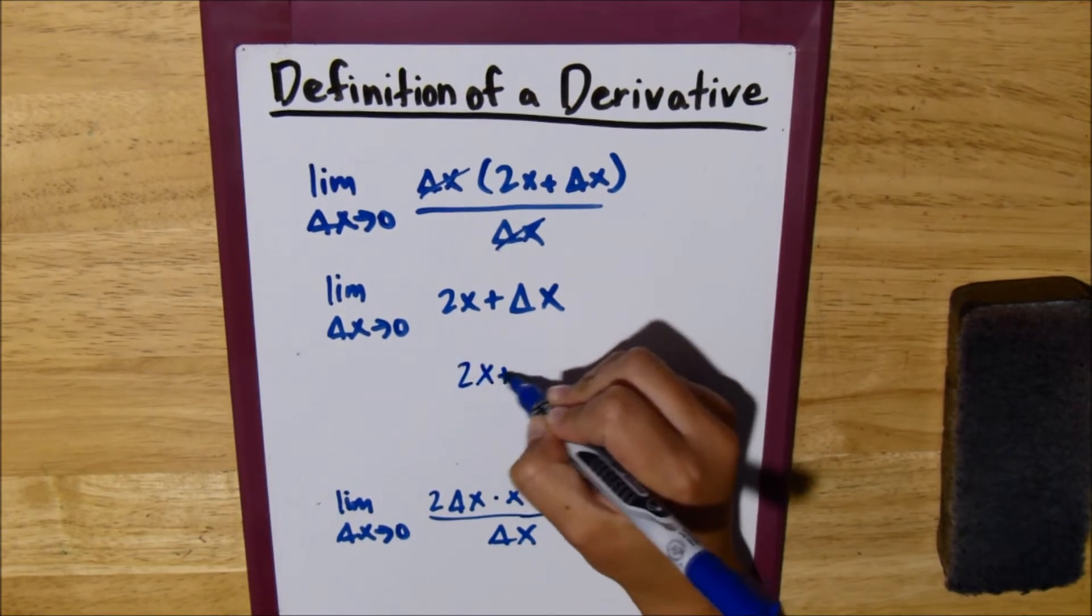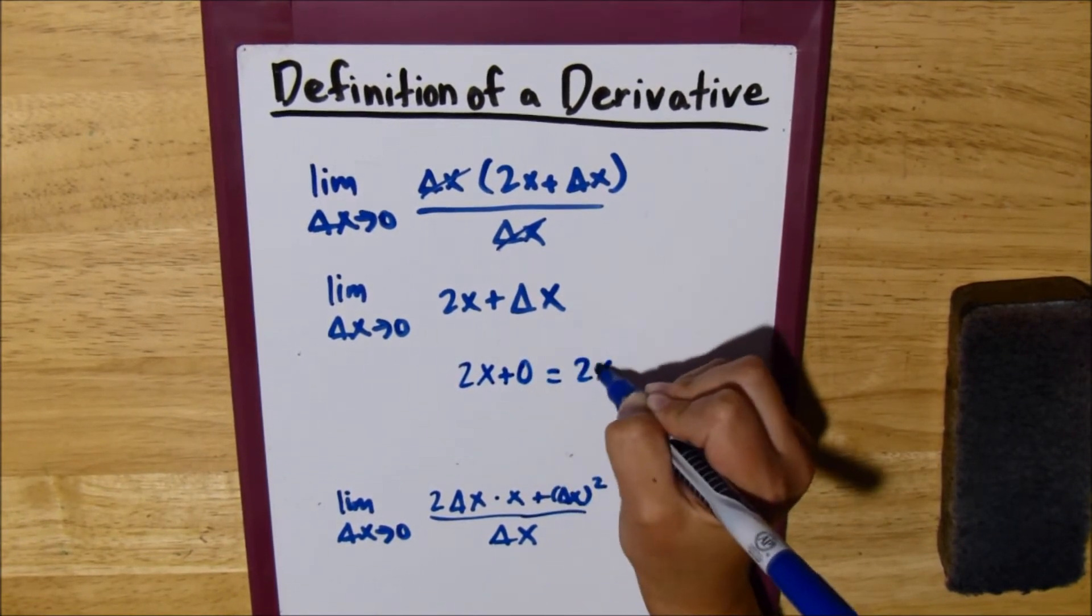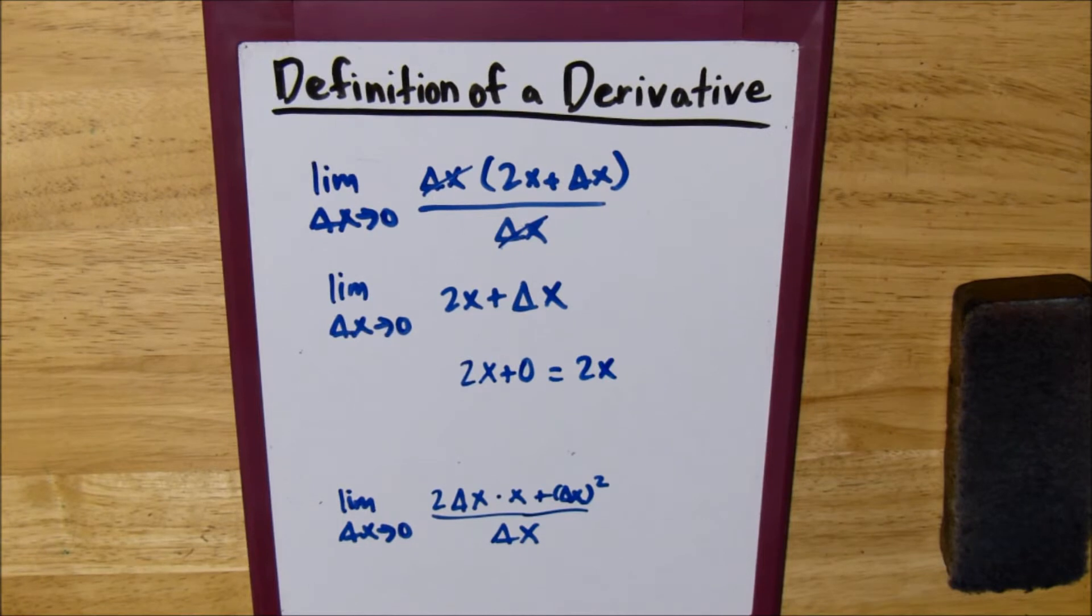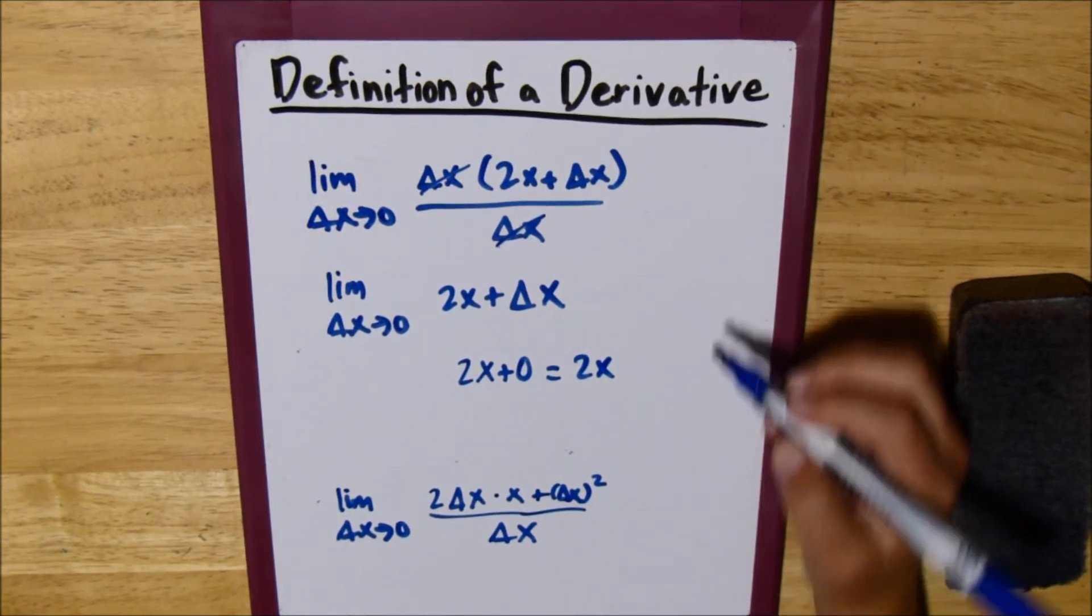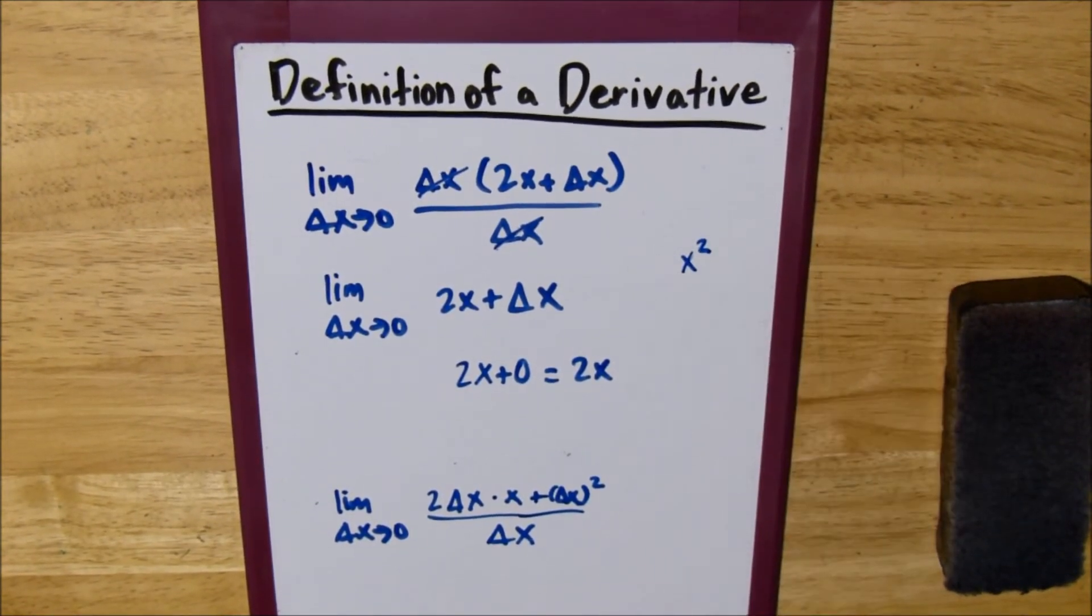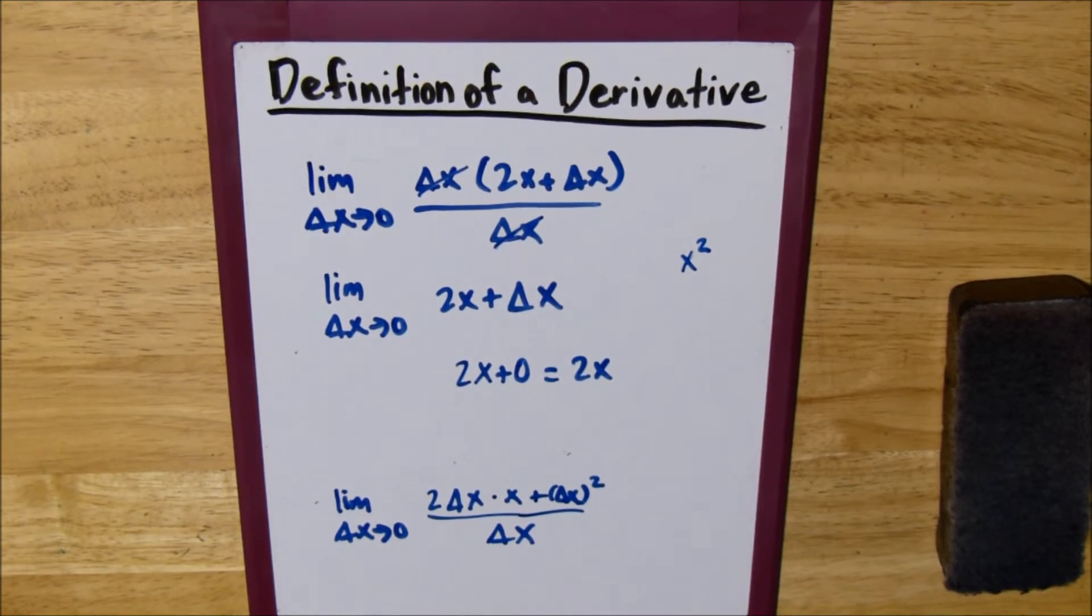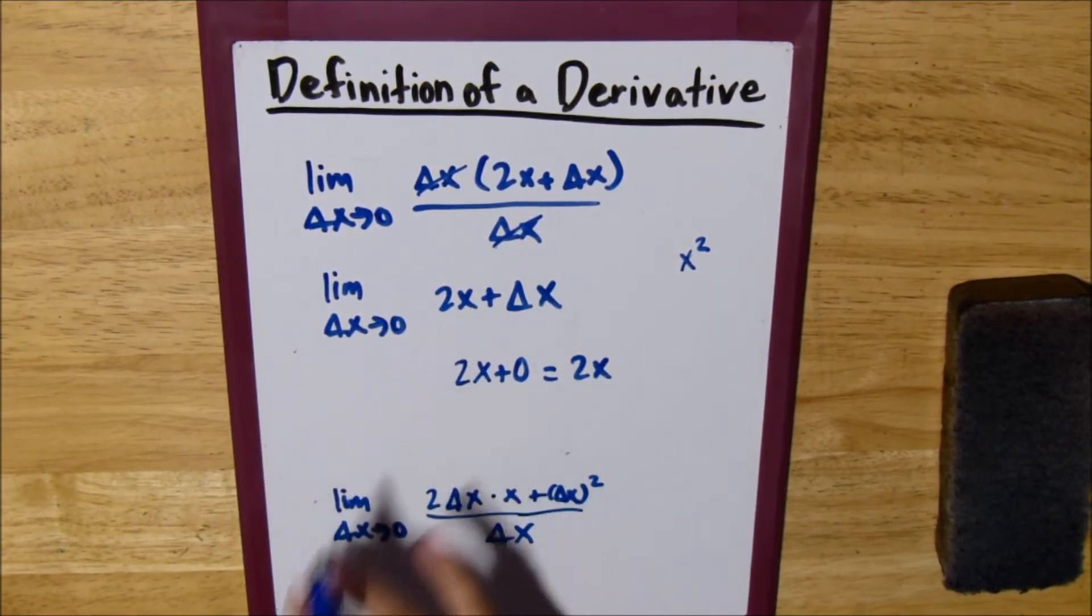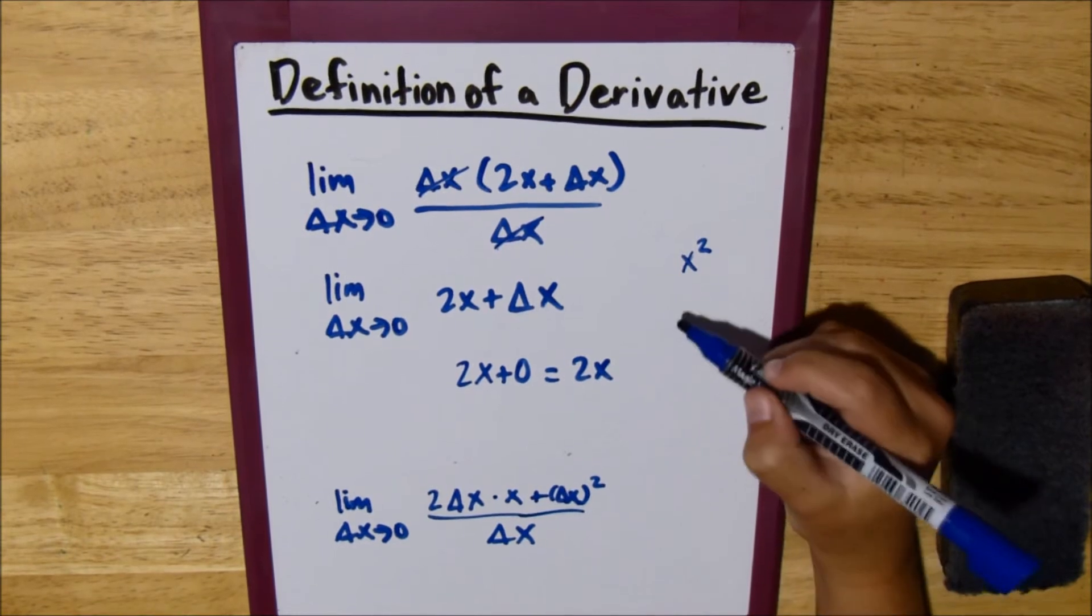So, 2x plus 0, essentially, is just 2x. Now, if we go back to our original function, x squared, and we use the power rule, which is basically just a faster way to do this, we end up with 2x.